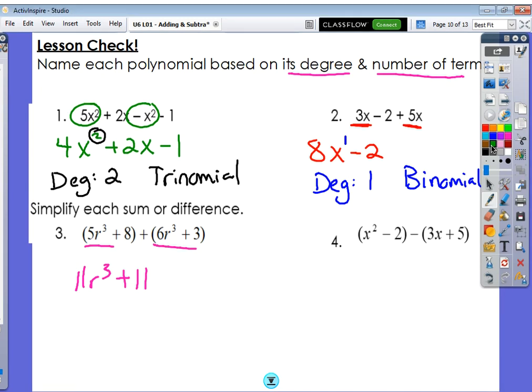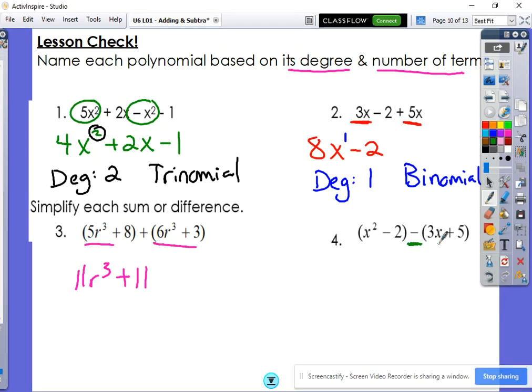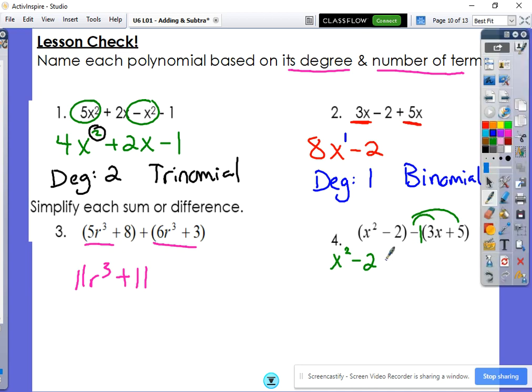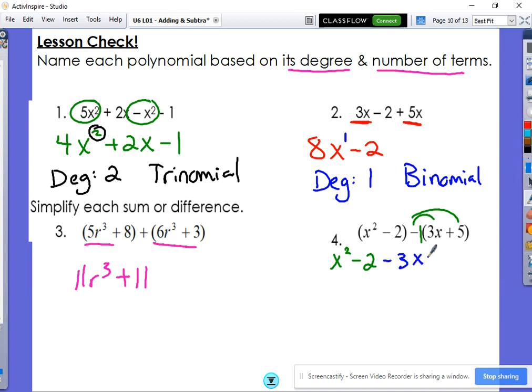Now, subtraction, though, not quite so quick. You've got to distribute the negative 1 first. So x squared minus 2 stays the same. But then negative 3x and negative 5 distribute.